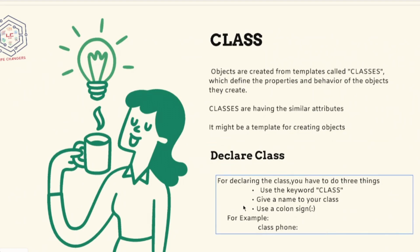How to declare the class? For declaring a class, you have to do three things. Use the keyword class, give a name to the class, use the colon sign. For example, you see the syntax as class Phone colon. This is the exact way to declare the class.